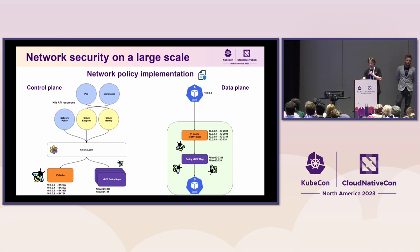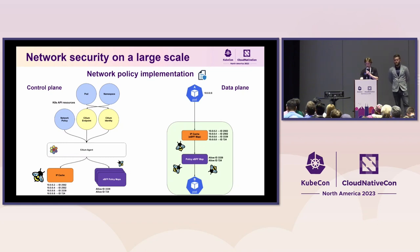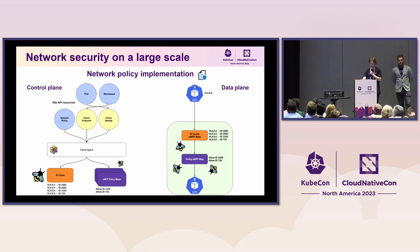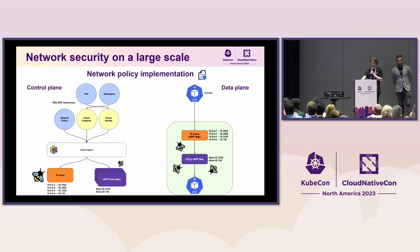To illustrate how network policies are implemented, we look at the control plane, which is handled by Cilium Agent — a daemon set running on every node. It watches Kubernetes API resources like pods, namespaces, network policies, and Cilium custom resources derived from pods and namespaces: Cilium endpoints and Cilium identities. With all this data, it populates eBPF maps — first, an IP cache per node that maps pod IPs to security identities, and then eBPF policy maps per endpoint, where each pod has one containing which identities are allowed to communicate with it.